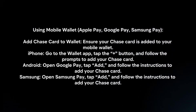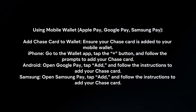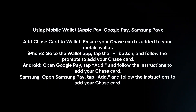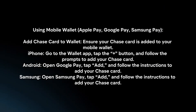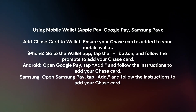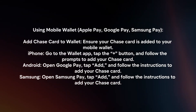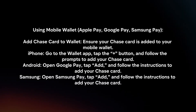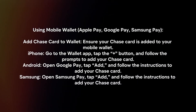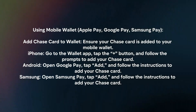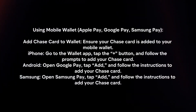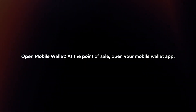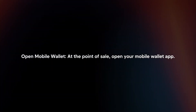Using a mobile wallet: Ensure your Chase card is added to your mobile wallet. On iPhone, go to the Wallet app, tap the plus button, and follow the prompts. On Android, open Google Pay, tap Add, and follow the instructions. On Samsung, open Samsung Pay, tap Add, and follow the instructions to add your Chase card.